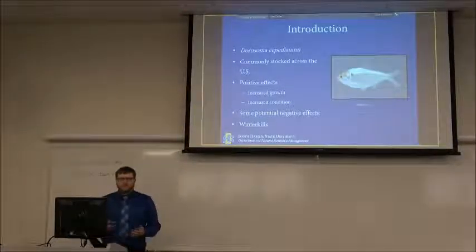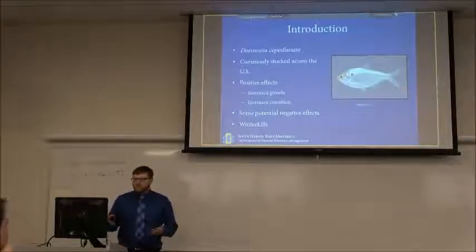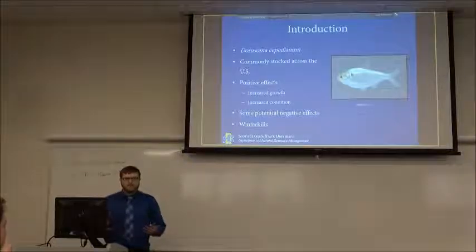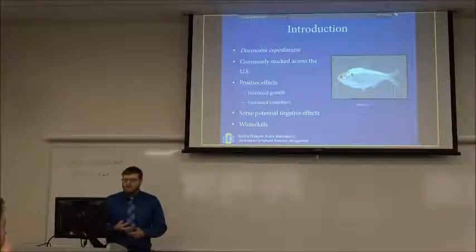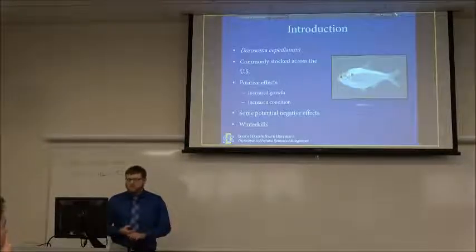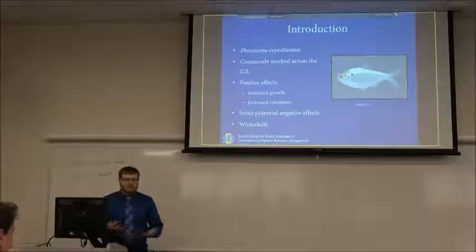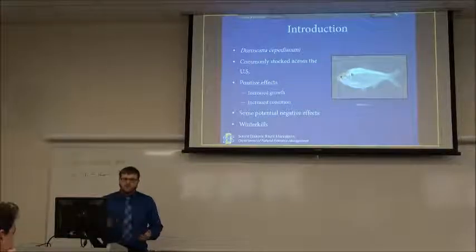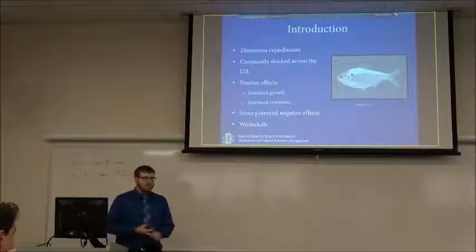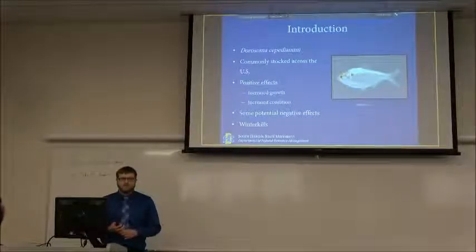The species I'm looking at that we're stocking as a prey species is Gizzard Shad. The reason why they're a good prey species is because they don't have spines — they're really soft-bodied — so it makes them a lot easier to eat for predators. They're commonly stocked throughout the U.S., stocked a lot in the south in small reservoirs. South Dakota is located on the northwestern part of the range, so they are natural in South Dakota, mainly in the Missouri River and its tributaries.